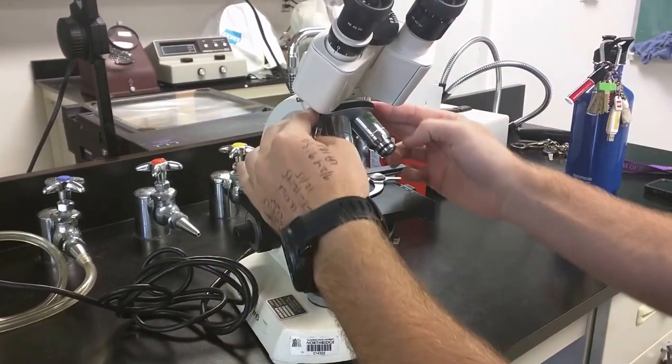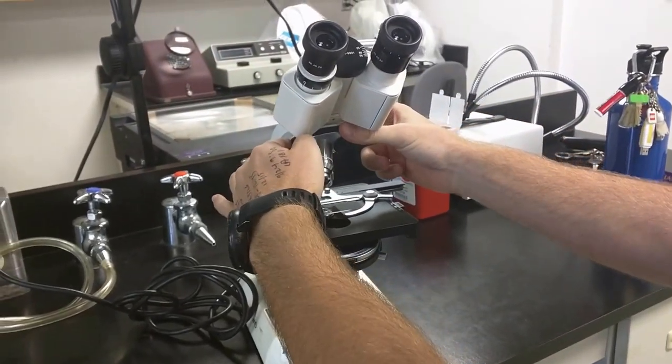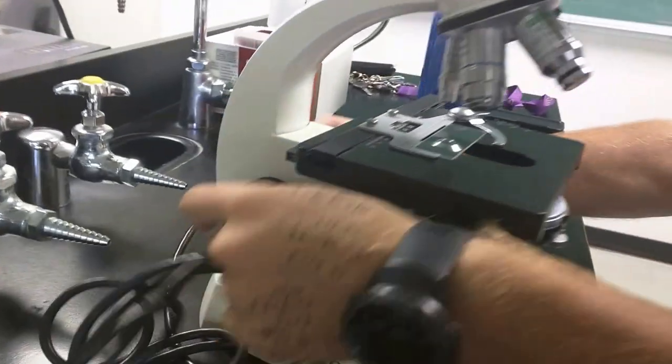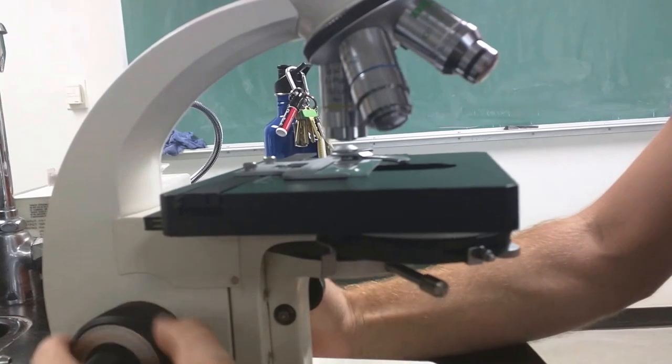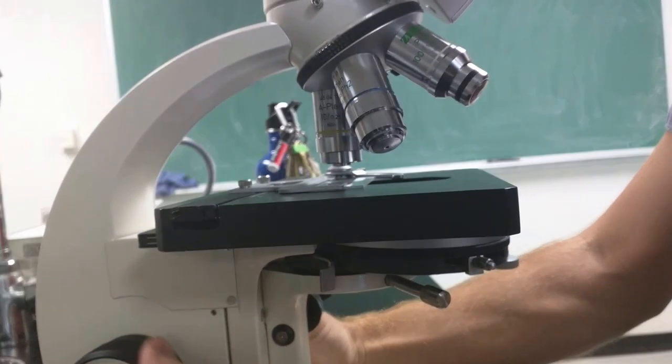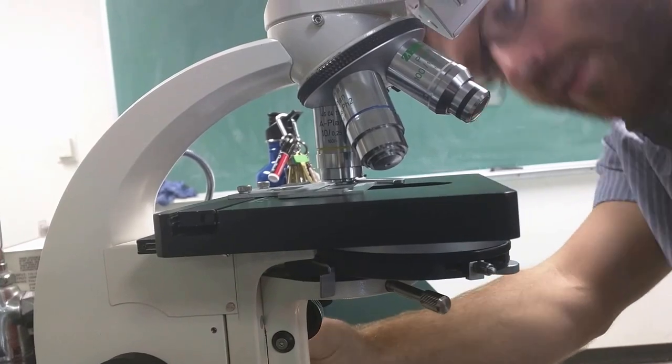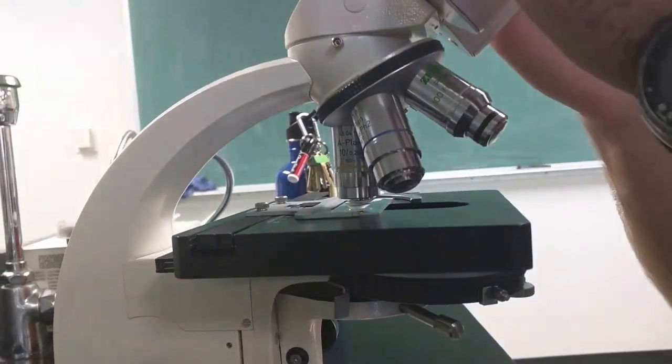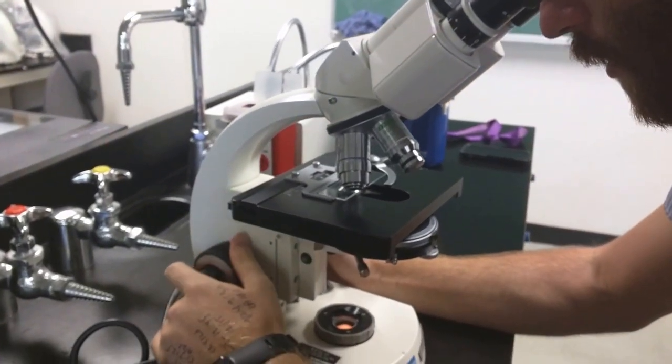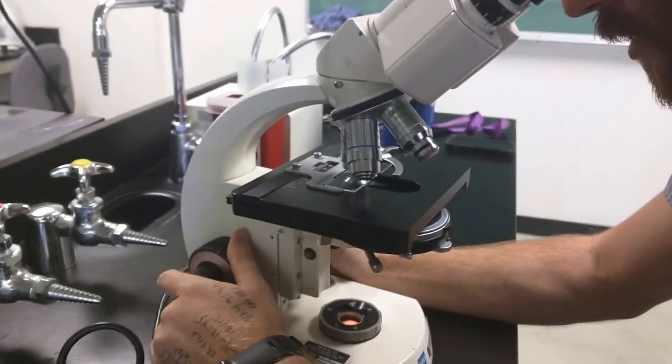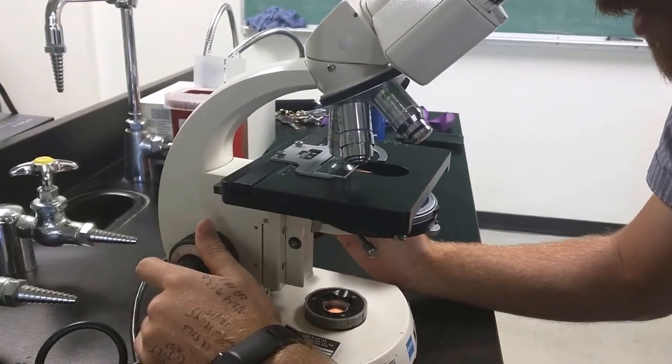Now at this point I'm going to use this rotating disc right here to flip the 10x in place. And as long as the 10x is in place I can raise this stage up all the way and my lens will never hit my slide. Only on the 10x though. And so I'm going to look through these oculars, these pieces right here. And I'm going to focus on the black R that I wrote on the slide. Just slowly lowering it down from the top and there. It looks like a waxy R.